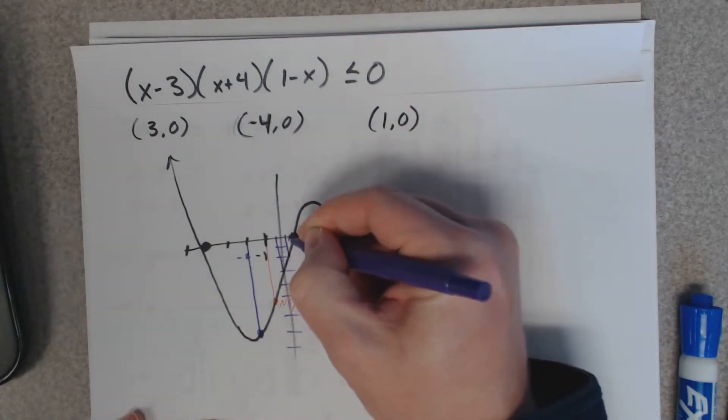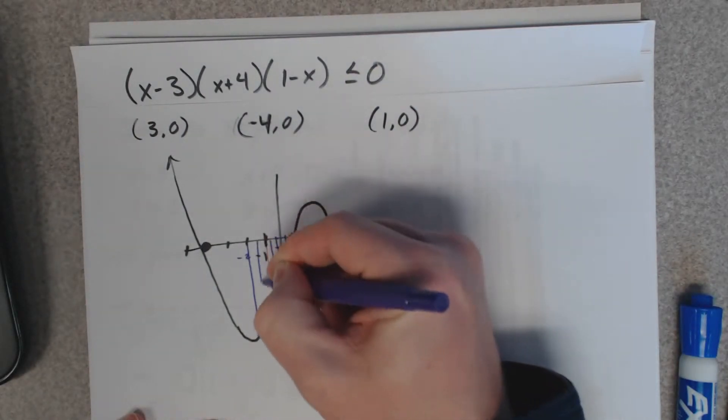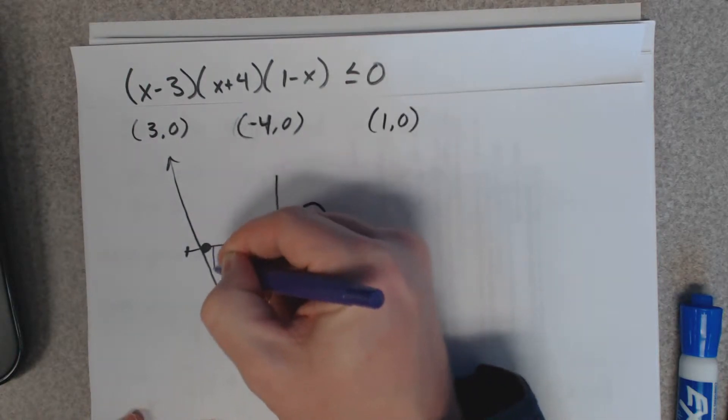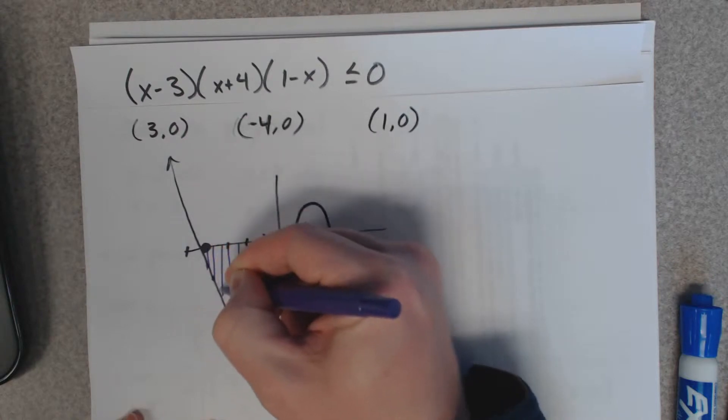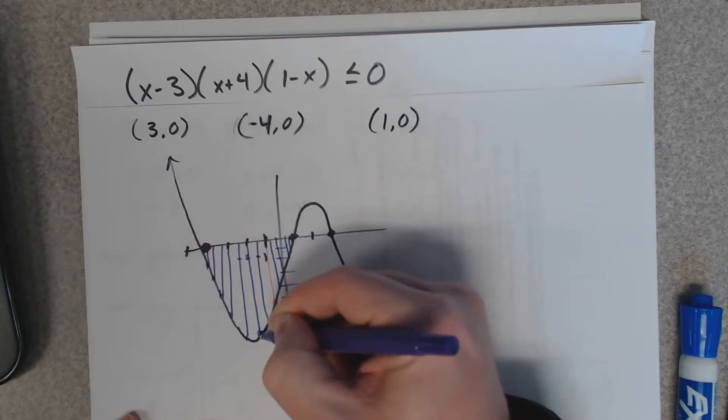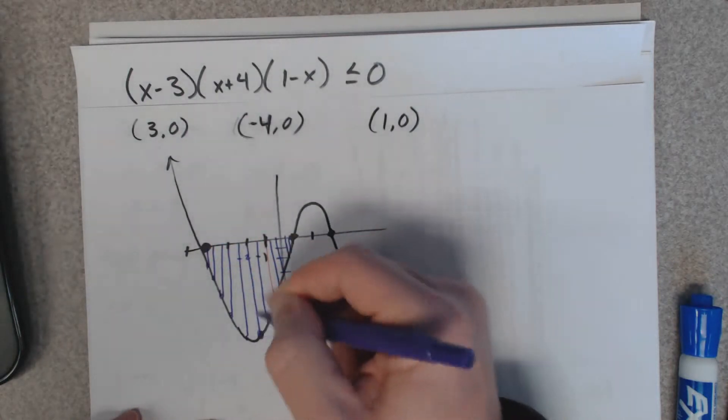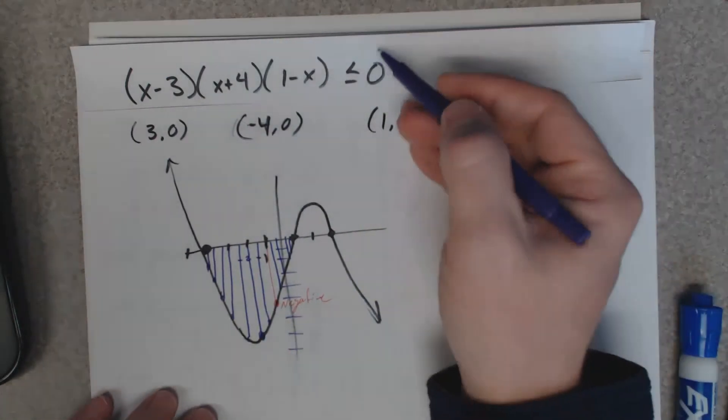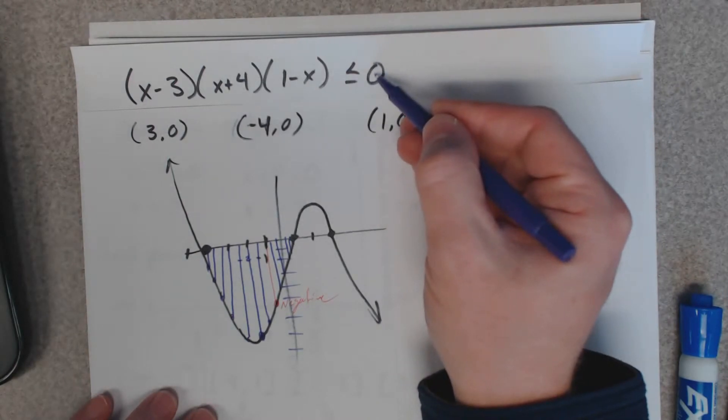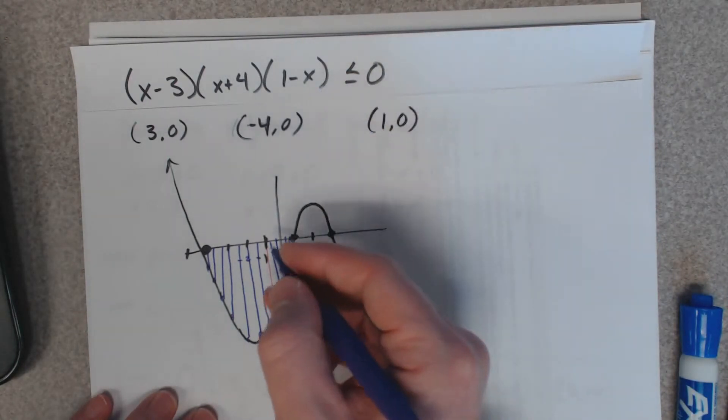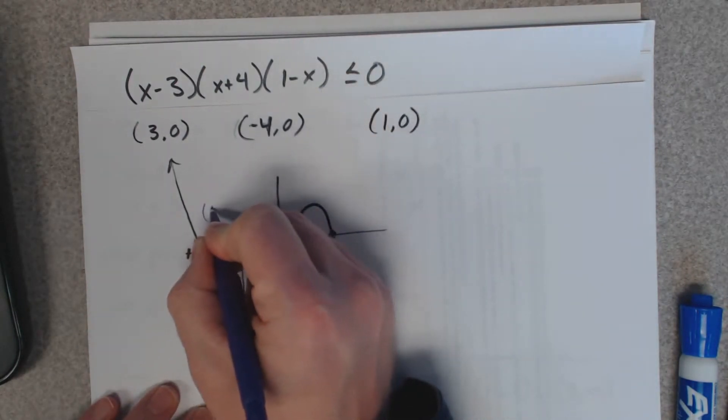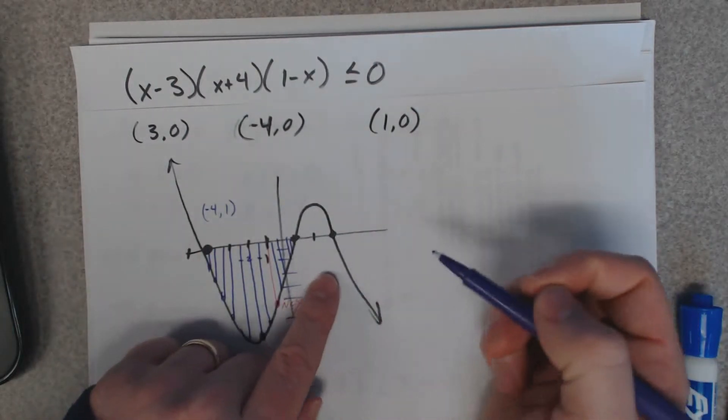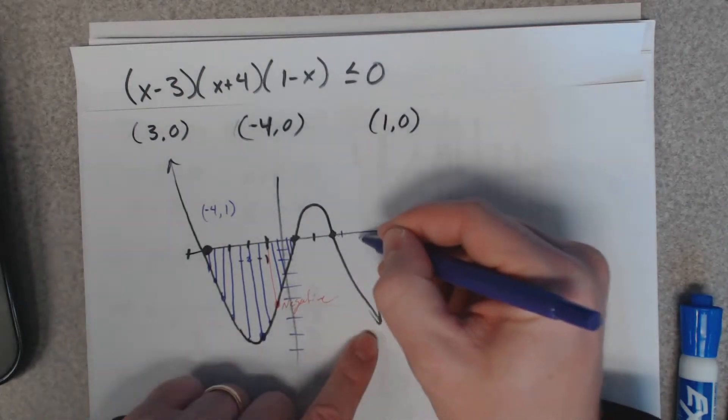Anything you pick between negative 4 and 1 is going to give you negative y values. You can go to your table on the graphing calculator and verify that. And what's so great about that is, well, less than 0 is negative, so my answer here is going to be from negative 4 to 1, and where else is the graph negative? Looks like when I pick numbers out here.